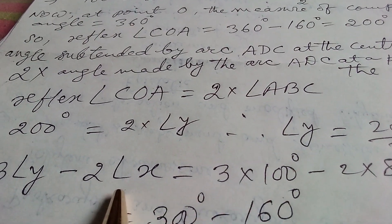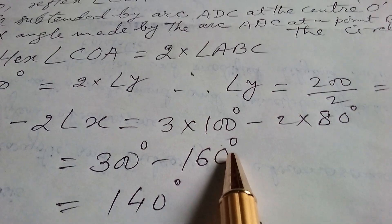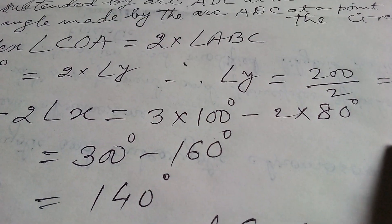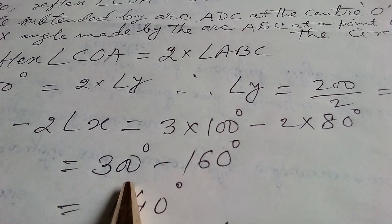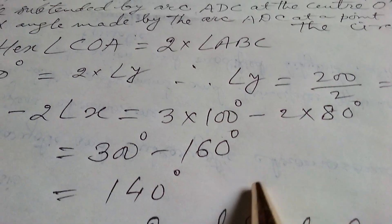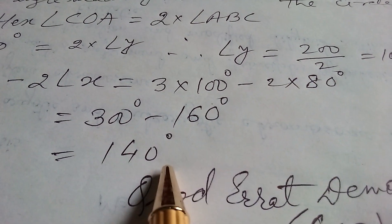minus 2 into 80 degrees, that is equals to 300 degrees minus 160 degrees, and that is equals to 140 degrees.